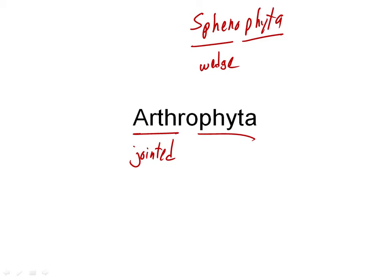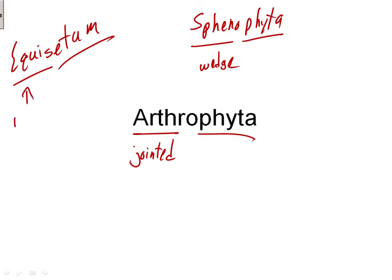Technically, there are recommendations in the botanical code of nomenclature about how you should name divisions, and neither of these names follow those recommendations. The recommendations say it should be based on a genus within the division. That's why Equisetophyta is sometimes used, because the genus we're studying is Equisetum. Equus means horse, and setum means bristle, so they're called horsetails.